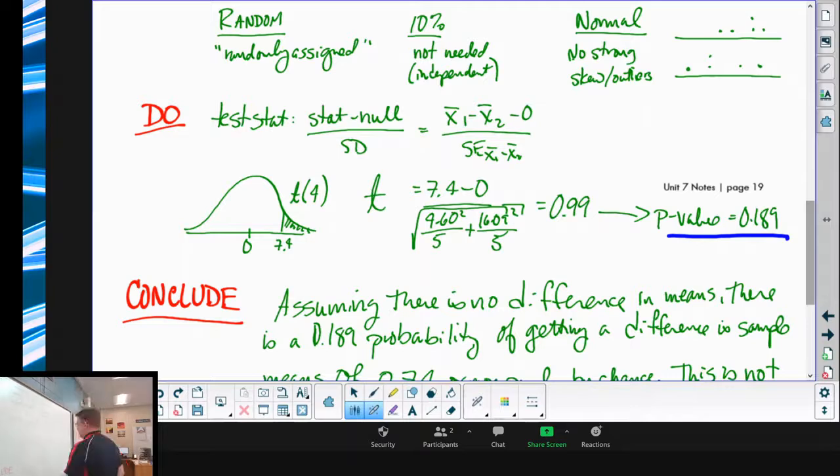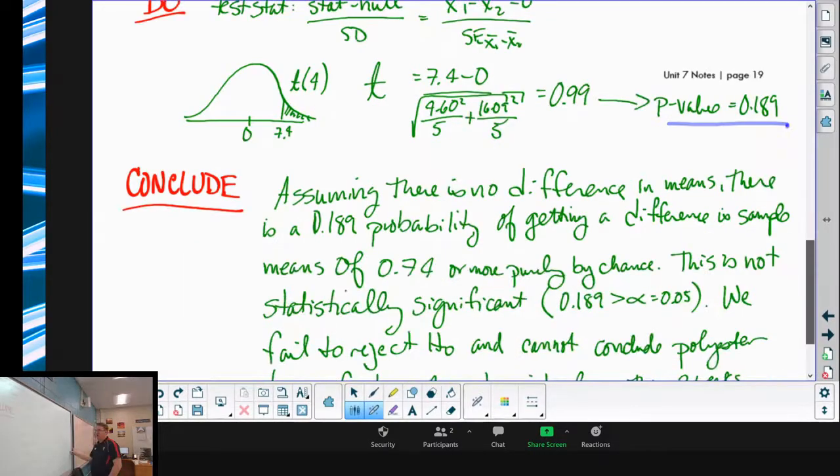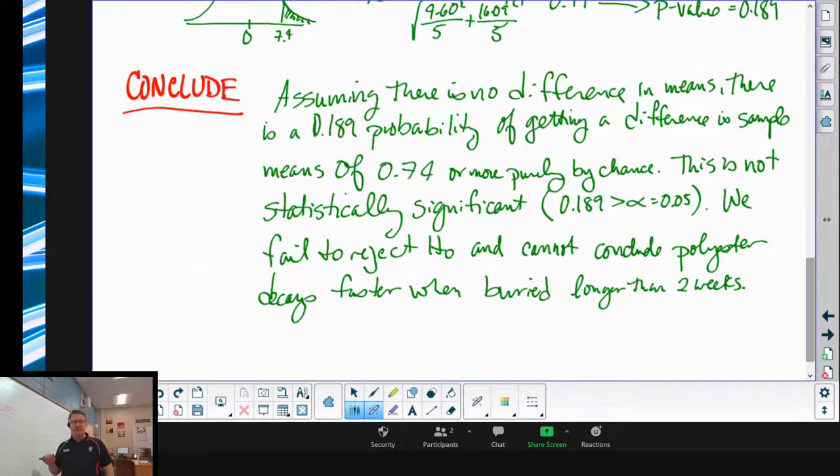So over here for our conclusion: assuming that there is no difference in means, there is a 0.189 probability of getting a difference of sample means of 0.74 or greater purely by chance. This is not statistically significant because that's bigger than our alpha value of 5%, so we fail to reject the null hypothesis.